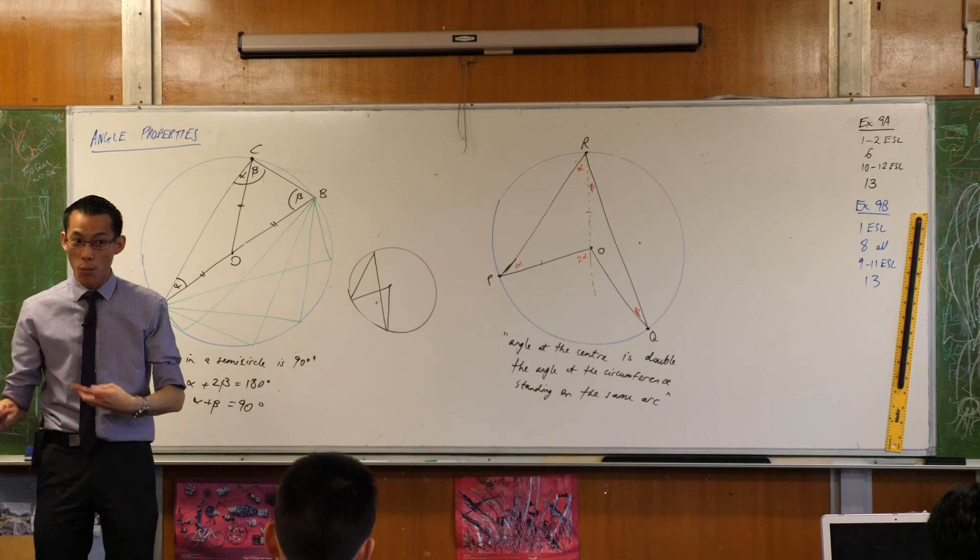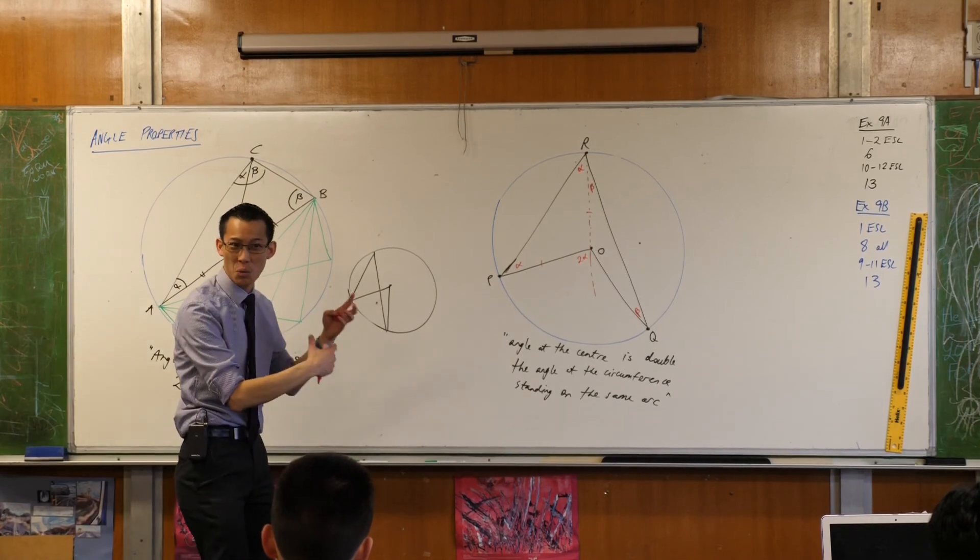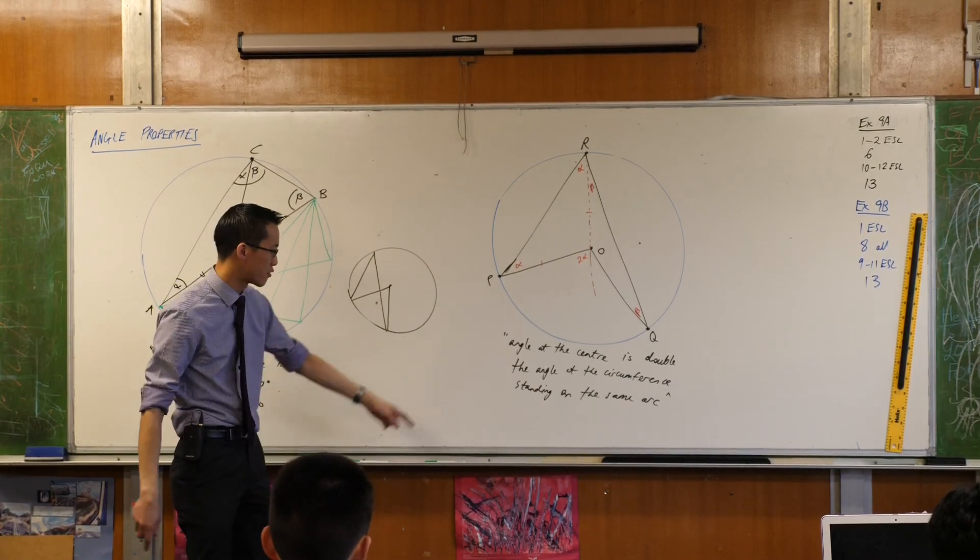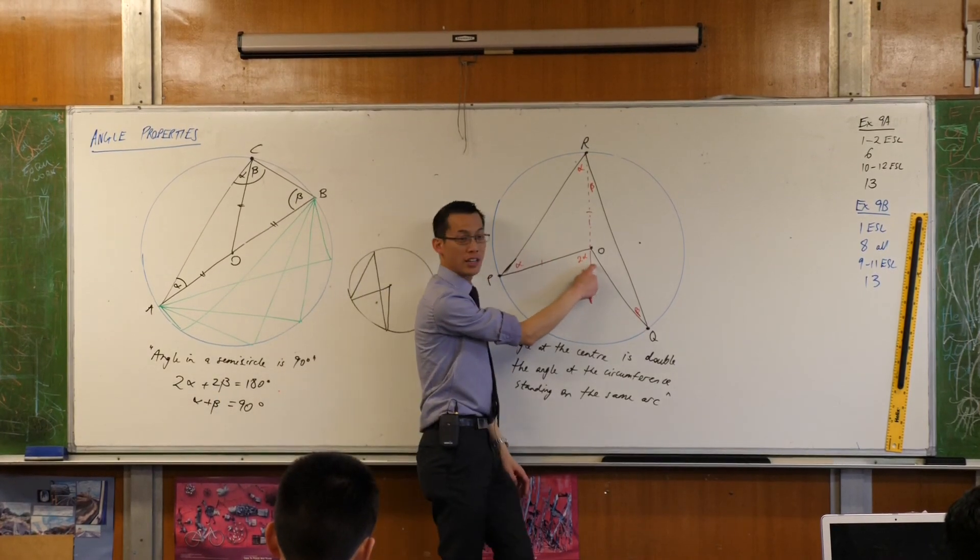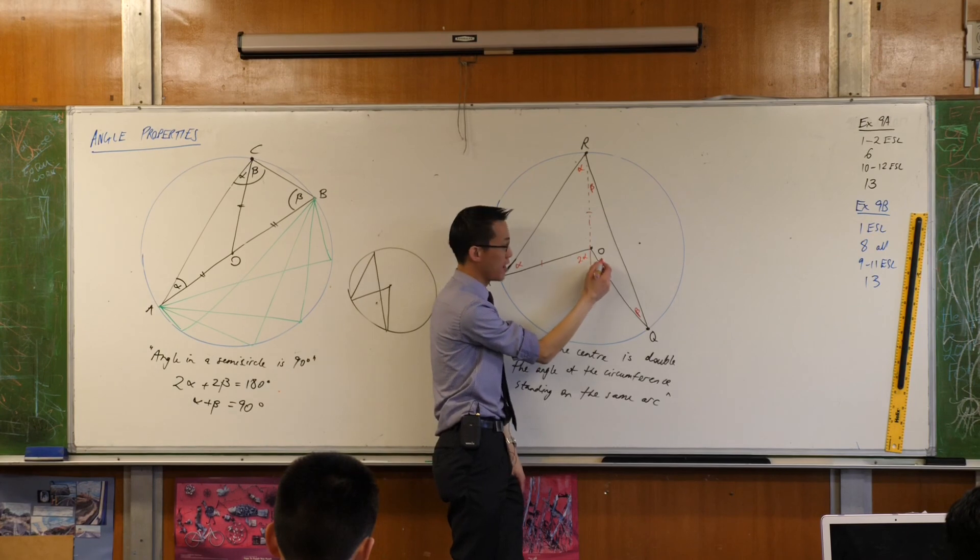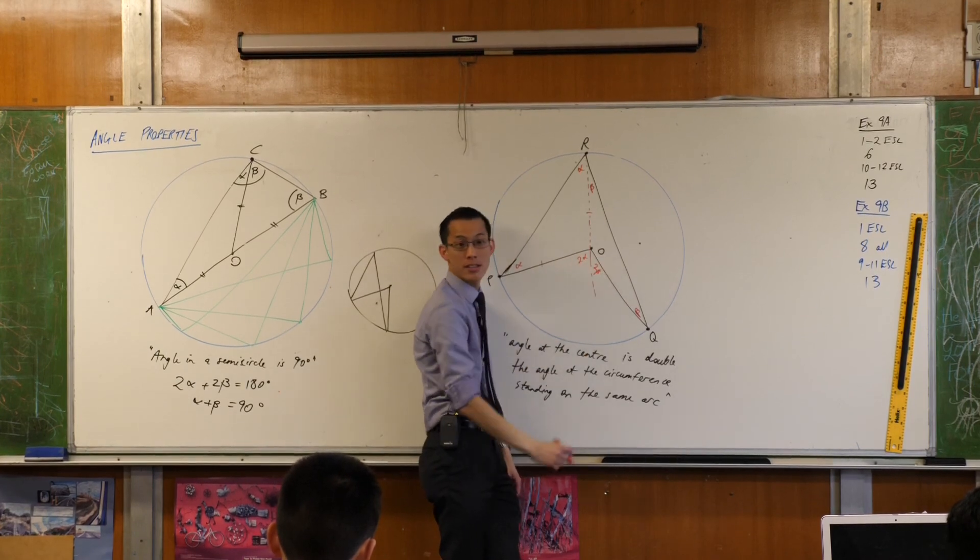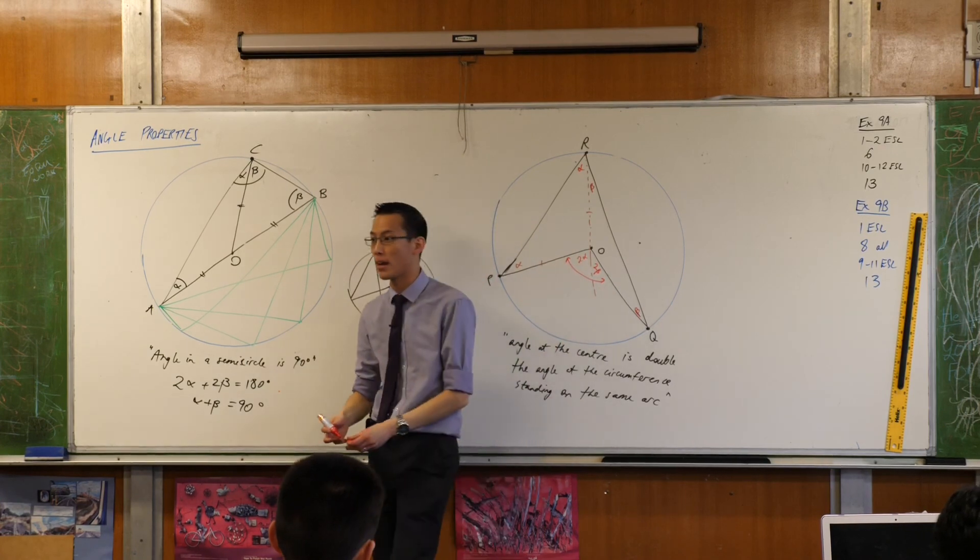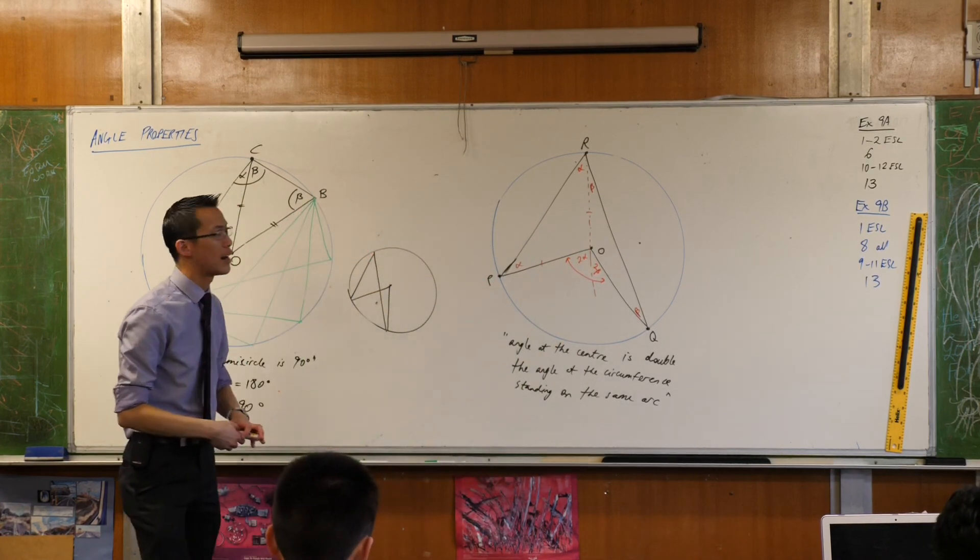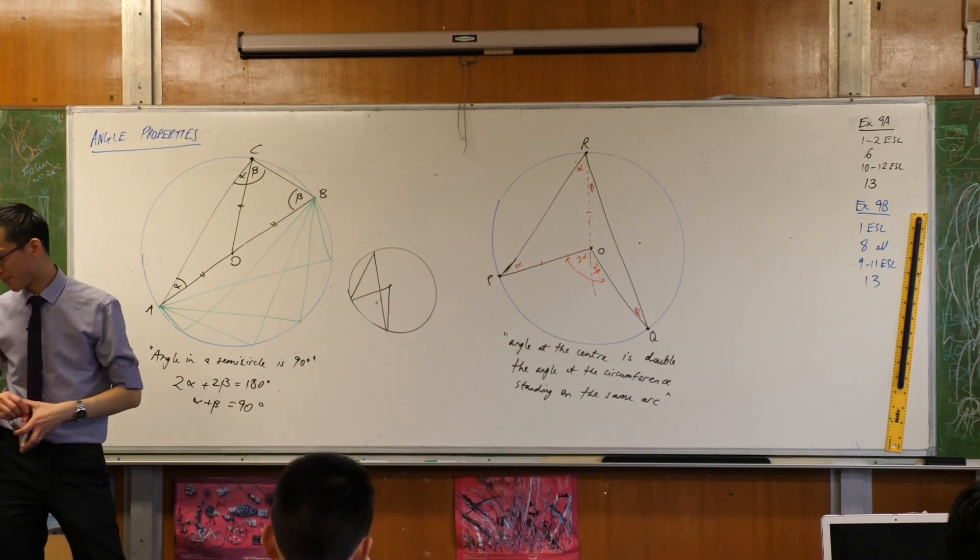This guy is going to be 2 alpha because the exterior angle of a triangle, this is your reason, equals the sum of the opposite two interior angles. By the way, I don't remember that wording. I remember the picture, and then the words just kind of come from there. I don't remember this wording either. I just look at the shape. Same logic. What's this guy in here, nestled in here? It's going to be 2 beta, and literally for exactly the same reason, and you're done. That's 2 alpha plus 2 beta, double the angle at the circumference as required. Okay. Thank you.